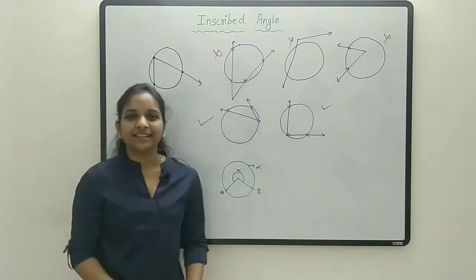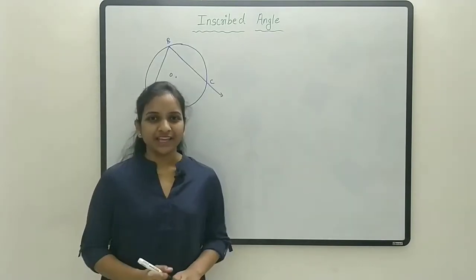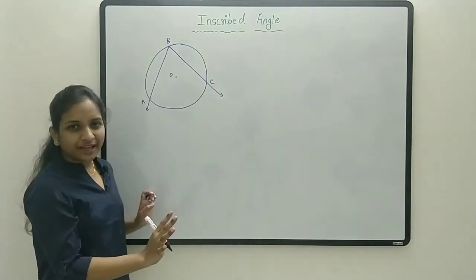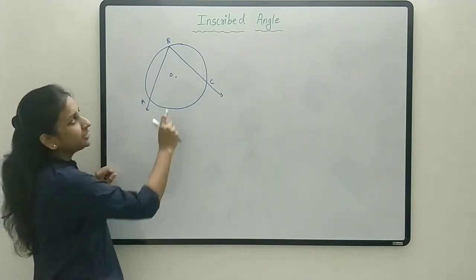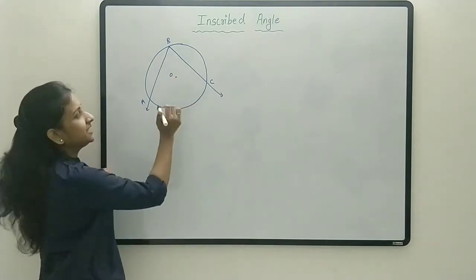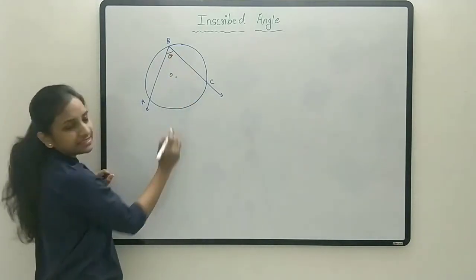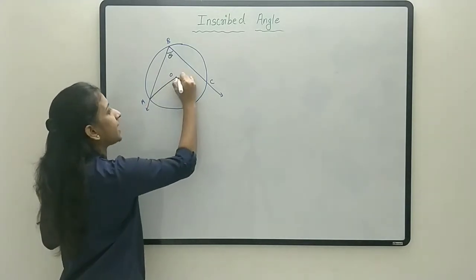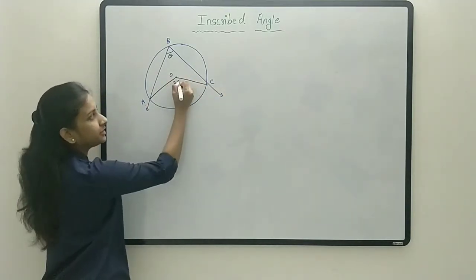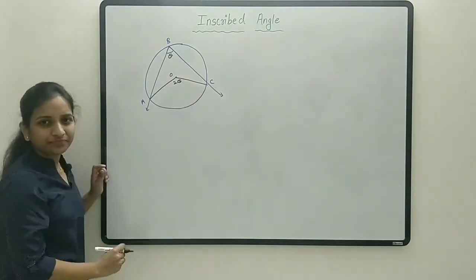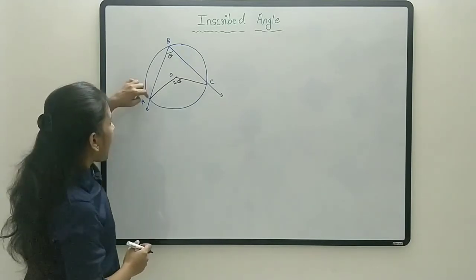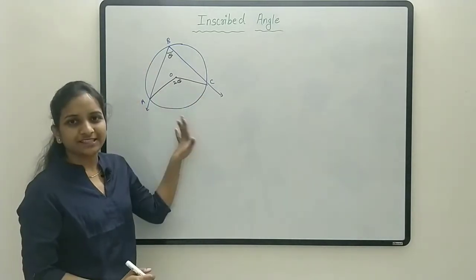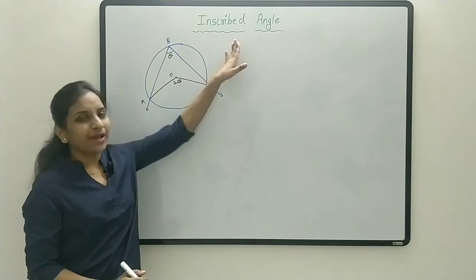Now let's see the inscribed angle theorem. Here, angle ABC is an inscribed angle. This theorem states that this inscribed angle — say it is theta — is half of the central angle AOC, which is 2 theta. So angle ABC is half of angle AOC. This is the inscribed angle theorem.